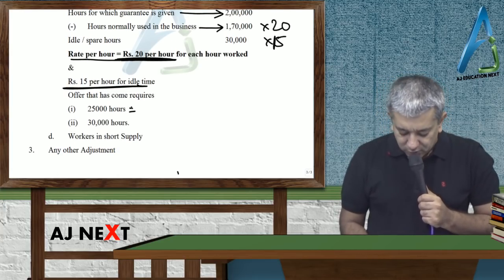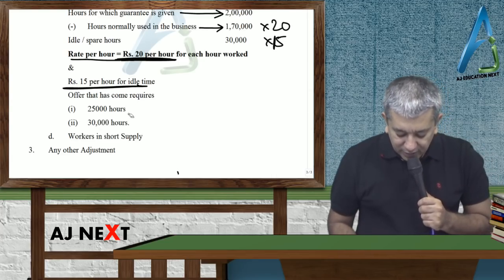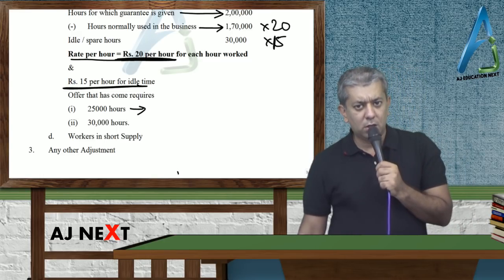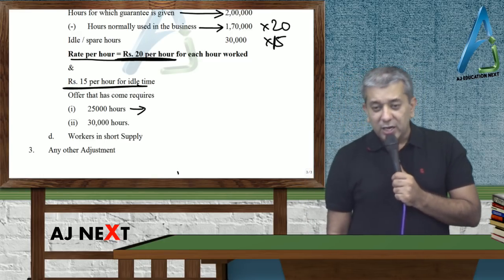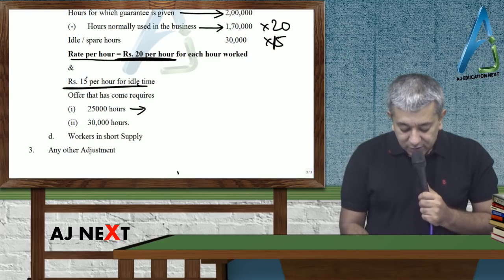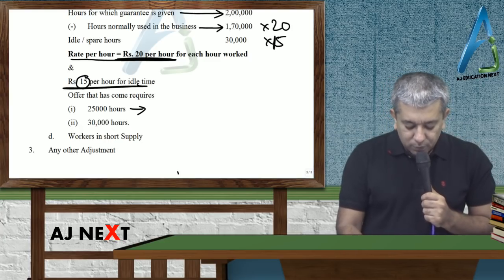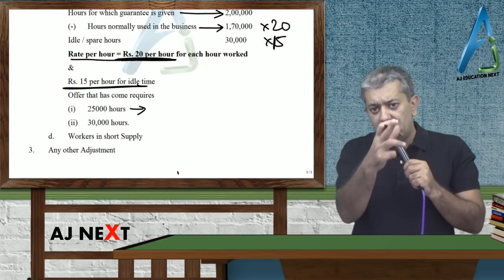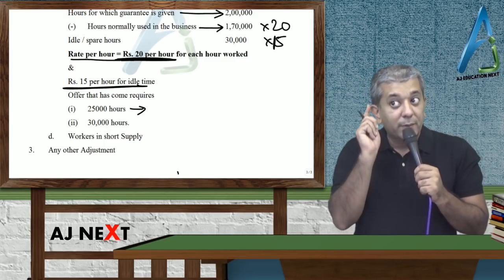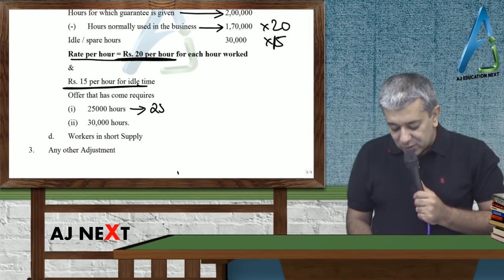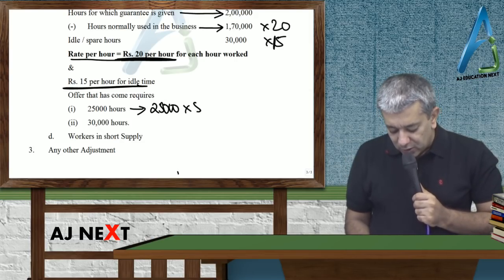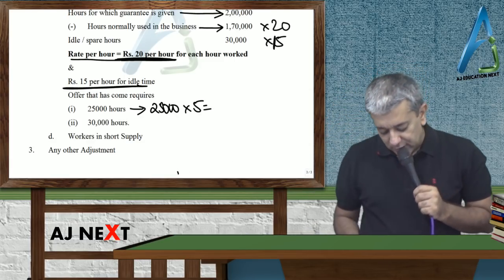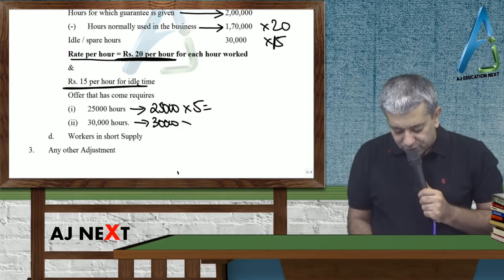Now think about the same third case we just solved. An offer came which needs 25,000 hours. Tell me, do you have 25,000 hours? Yes sir. These 25,000 hours, if workers sit idle, you would pay them at what rate? 15. But now the offer has come. You tell them come on, don't sit, do the work. Now they will work, you will pay them 20. So your extra labor cost will be how many rupees? 5. That is 20 minus 15. For 30,000, it will become 30,000 into 5. But then after that, third one.